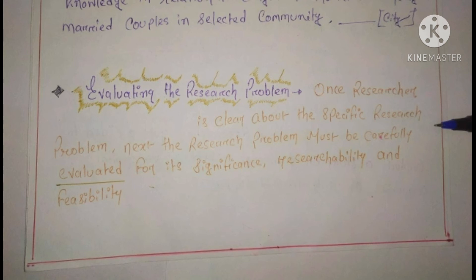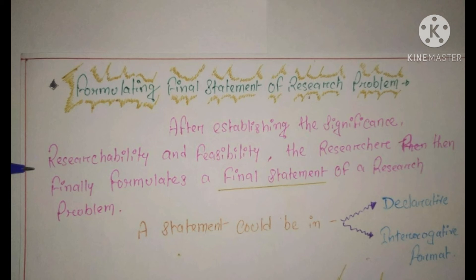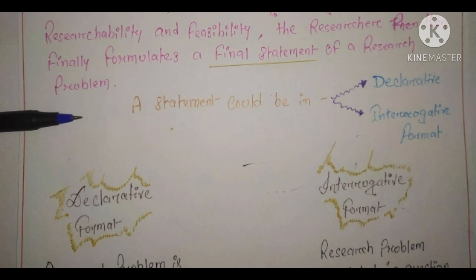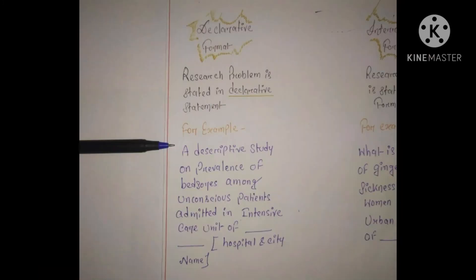The fifth and last step is formulating the final statement of research problem. After establishing significance, research ability, and feasibility, the researcher finally formulates a final statement of the research problem. After all the process, we finalize our statement. A statement can be presented in two ways: declarative and interrogative format. In declarative format, the research problem is stated as a declarative statement — for example: 'A descriptive study on prevalence of bed sores among unconscious patients admitted in the intensive care unit of a selected hospital.' Here we are declaring our problem.